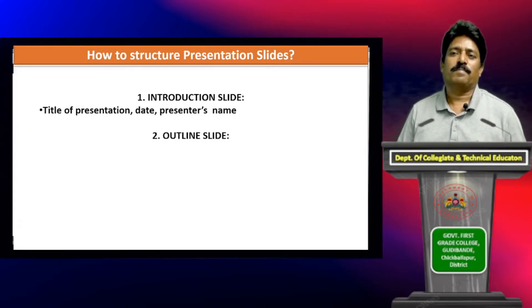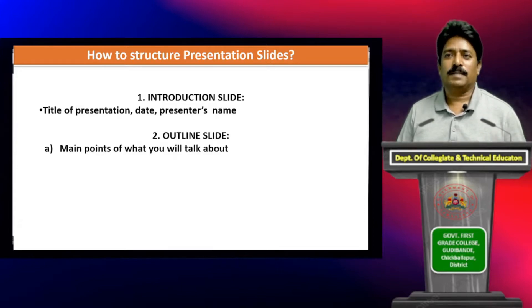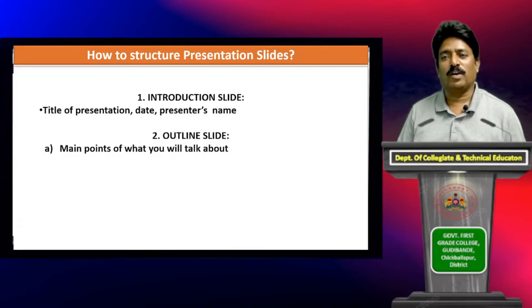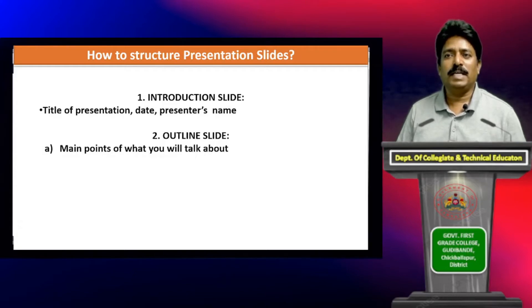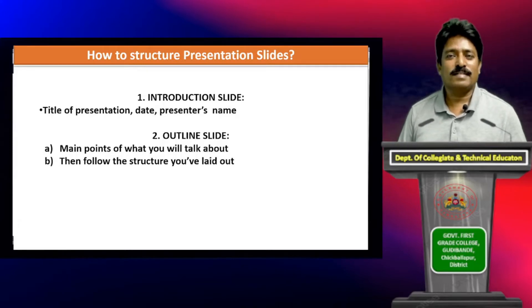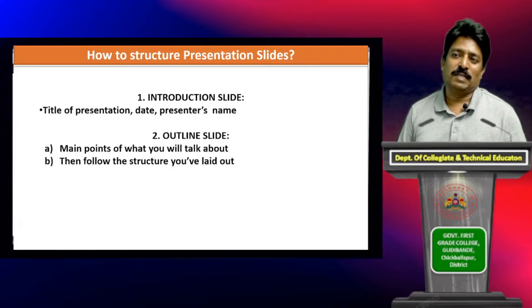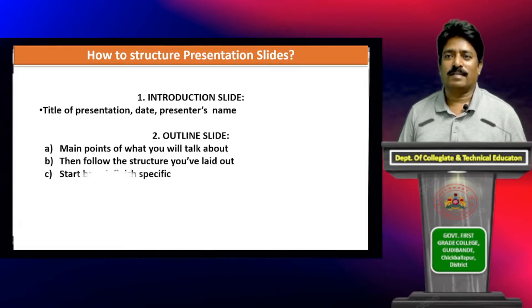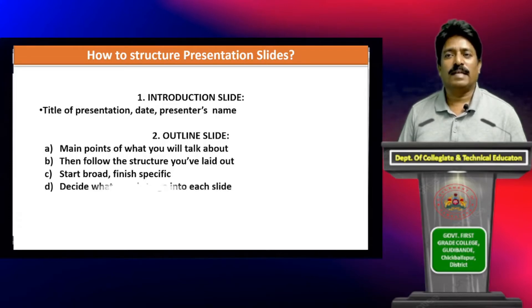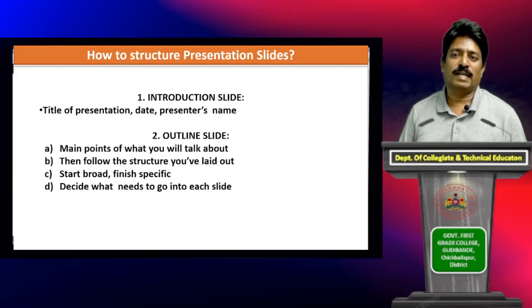Moving to the next thing: the outline slide. This outline slide consists of five points. First, you should have the main points of what you will talk about. Second, you have to follow the structure you have laid out. Third, start broad and finish specific. Fourth, decide what needs to go into each slide. Fifth, simplicity.